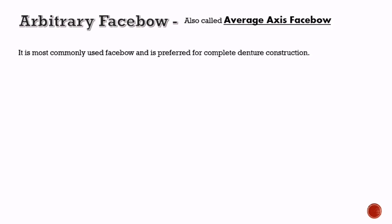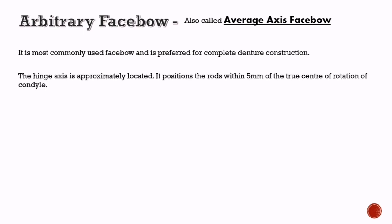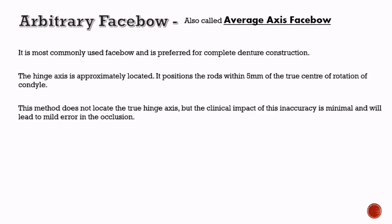The arbitrary face bow, also called average axis face bow, is the most commonly used face bow and is preferred for complete denture construction. The hinge axis is approximately located and it positions the rod within 5 mm of the true center of rotation of the condyle. This method does not locate the true hinge axis, but the clinical impact of this inaccuracy is minimal.